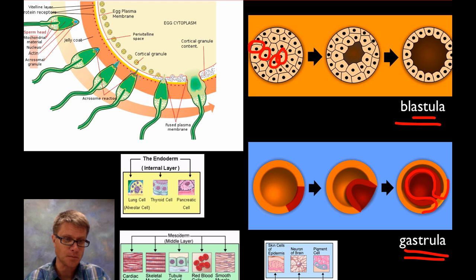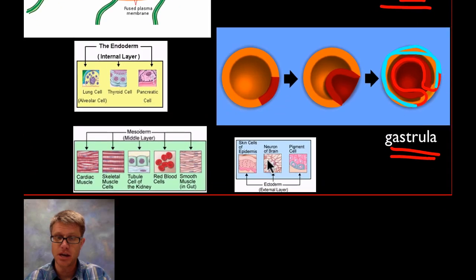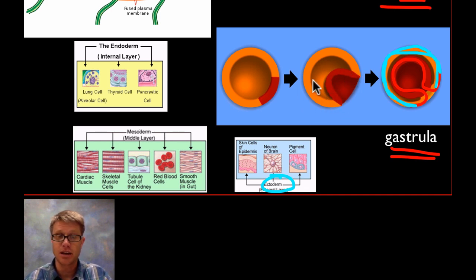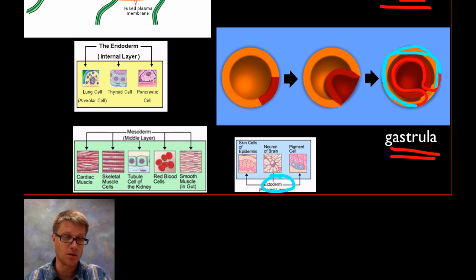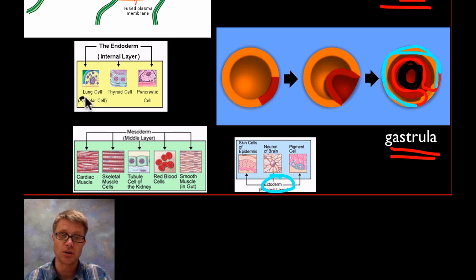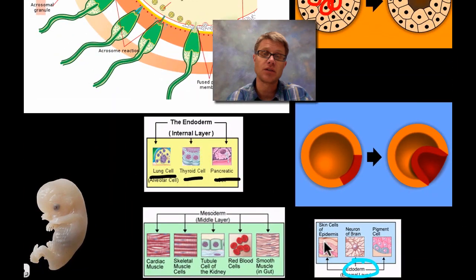Basically what happens is there's going to be an outer layer that eventually forms the ectoderm — the ectoderm forms nervous tissue and your skin. Then we have a middle layer, the mesoderm, which forms your muscles and bones. Finally on the inside we have the endoderm, which forms basically the linings of your organs — the cells of the lungs, thyroid, and pancreatic cells. These cells will eventually form organs and then eventually form an organism.